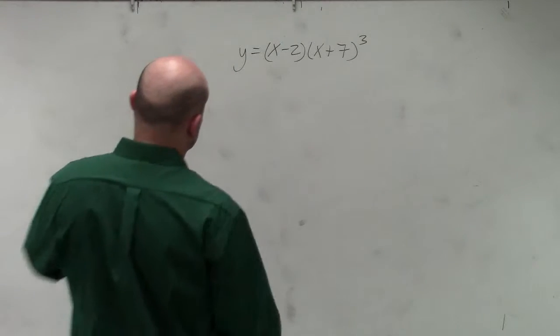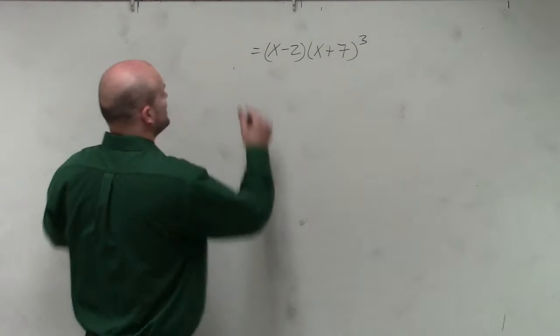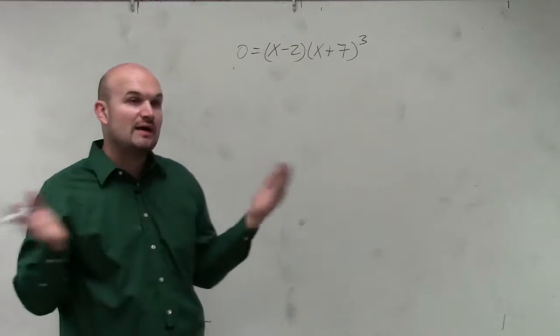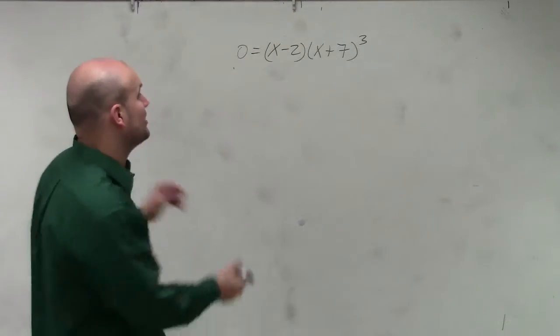So in this one, they're asking us to find the zeros, so we replace this with 0. Therefore, now it's already in factored form, so I apply the zero product property.